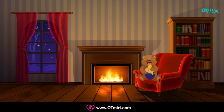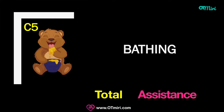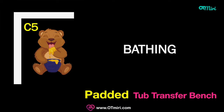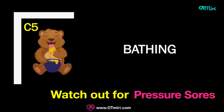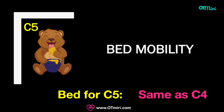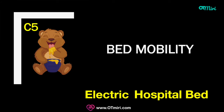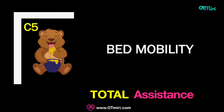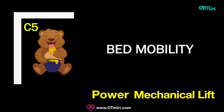For bathing at C5, total assistance is still required using a padded tub transfer bench or shower/commode chair. The 'padded' detail is important because being wet on a hard surface increases risk of pressure sores. The bed at C5 remains the same as C1 through C4 — a full electric hospital bed with Trendelenburg feature and side rails — still requiring total assistance for transfers to and from bed and wheelchair, so a power or mechanical lift is still useful.